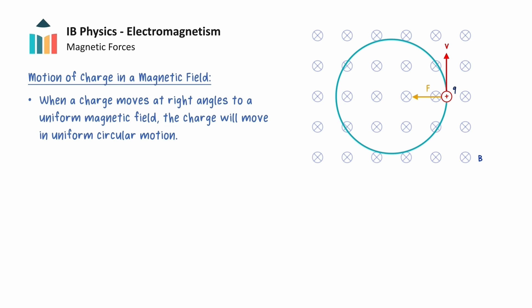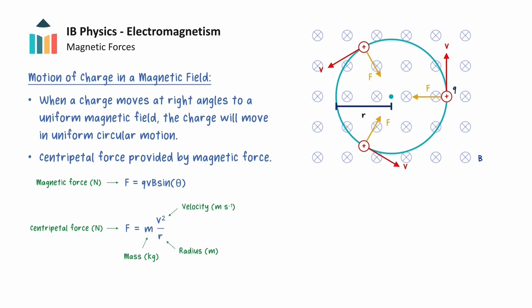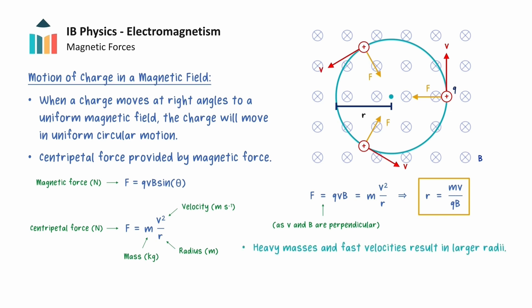There must be a centripetal force to follow a circular path, and the magnetic force always points towards the center of the circular path, so the centripetal force must be provided by the magnetic force. We can obtain an expression for the radius of this circular path using the expressions for the magnetic force on a moving charge and the centripetal force from the data booklet. The magnetic force simplifies to QVB as the charge moves at right angles to the magnetic field. This can be equated to the centripetal force and rearranged to make the radius the subject. From this, we can see that heavy or very fast charges will move in larger circles, while large quantities of charge and stronger magnetic fields will result in smaller circular paths, and this result forms the basis of how particle accelerators are built.